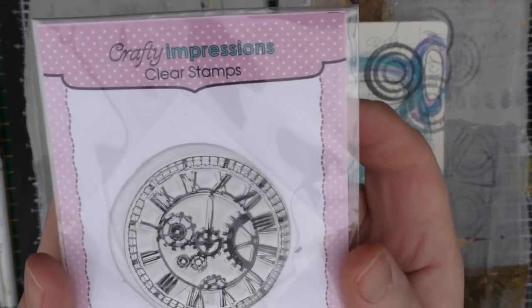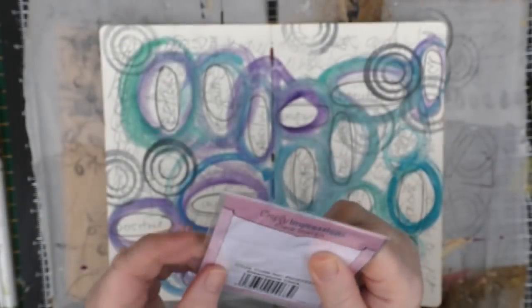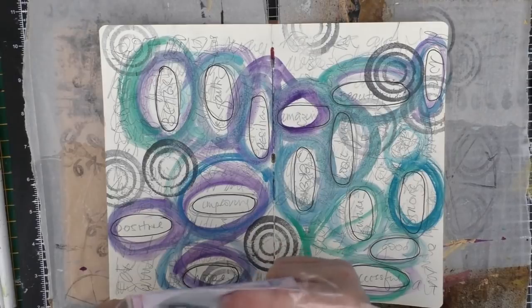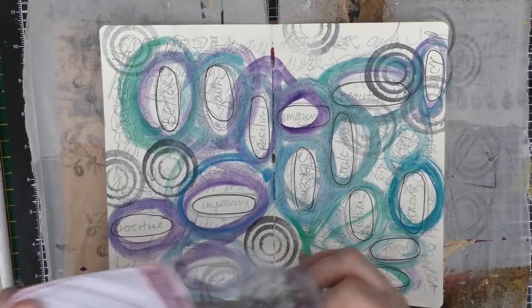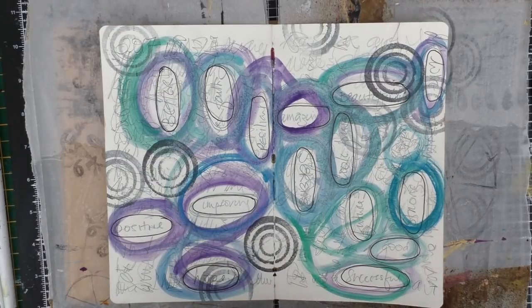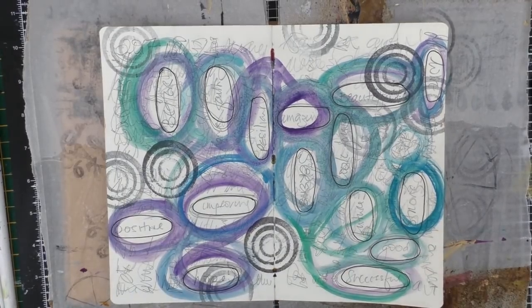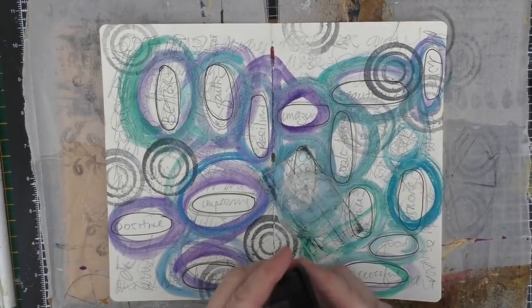At this point I started to think about that notion of time, crossing over from 2017 to 2018. I remembered that I had a stamp that had a clock on it and I decided to stamp the clock in several places on my page. I just used some black Stazon ink.